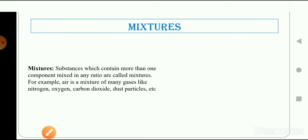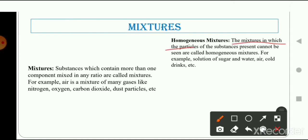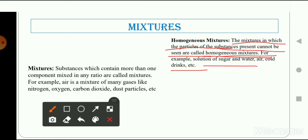Mixtures are of two types: homogeneous and heterogeneous. Homogeneous mixtures are those in which the particles of substances present cannot be seen. Examples include a solution of sugar and water, air, and cold drinks. In homogeneous mixtures we cannot distinguish between the substances just by looking at them. For example, if we mix a tablespoon of salt in a glass of water, we cannot see the salt — that is a homogeneous mixture.